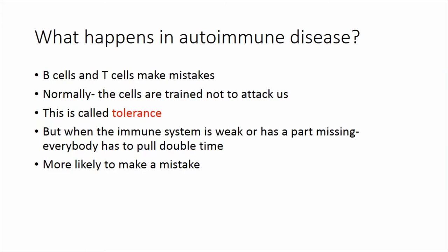What happens in autoimmune disease? B cells and T cells make a mistake. They undergo training to recognize self—the B cells are trained not to make antibodies to our own cells. This concept is called tolerance. Things can go wrong, and we refer to that as broken tolerance. If your immune system is weak or missing a part, the rest of the immune system is working double time—more likely to make mistakes. That's what happens in autoimmune disease. Some examples are rheumatoid arthritis, diabetes mellitus, Sjogren's syndrome, and inflammatory bowel disease.